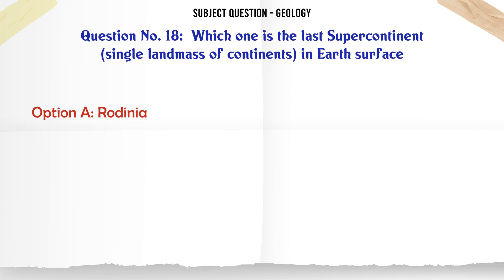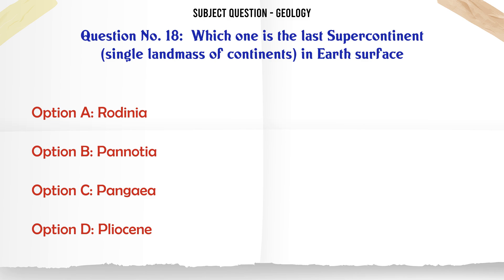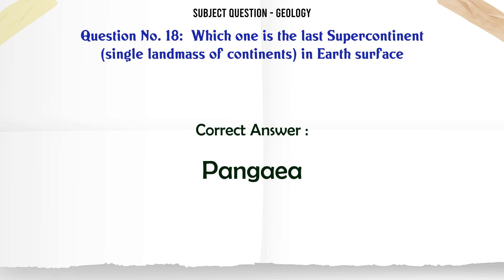Which one is the last supercontinent — single landmass of continents — in earth's history? A. Rodinia. B. Pannotia. C. Pangaea. D. Pliocene. The correct answer is Pangaea.